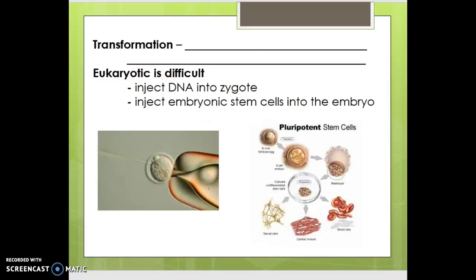In the last lecture, we left off with this idea called transformation — the introduction of DNA into a different cell. Sometimes it's intentional, where scientists are injecting it. Other times, it's unintentional, in the case of bacteria that actually pick up DNA from the environment and incorporate it into their cell. If something is dead and the DNA is on the ground, bacteria can potentially pick up those genes and blend them into their own genetic code.